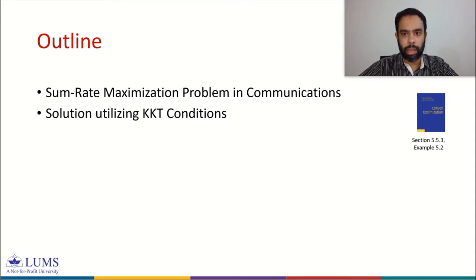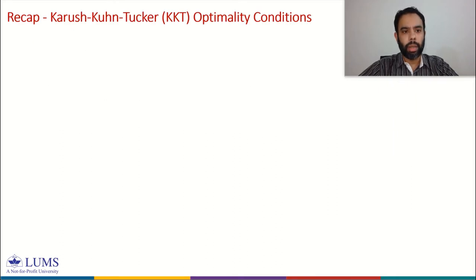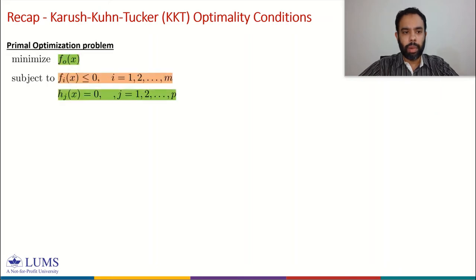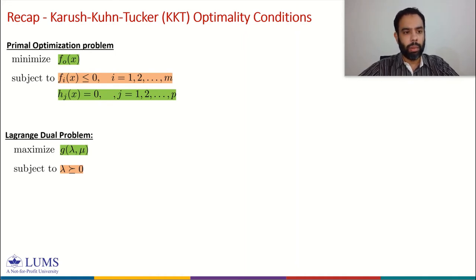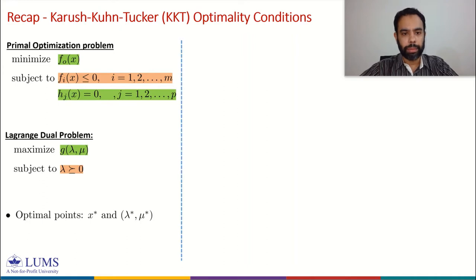We will discuss the formulation of the sum rate maximization problem in communications and later solve it using KKT conditions. We start with a recap of the KKT optimality conditions. For a primal optimization problem we have a Lagrange dual problem. The primal problem does not need to be convex, but the Lagrange dual problem is always convex.